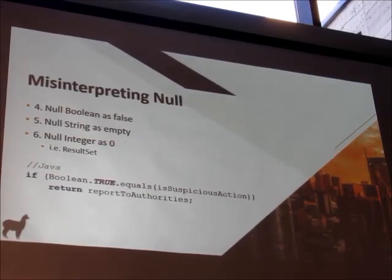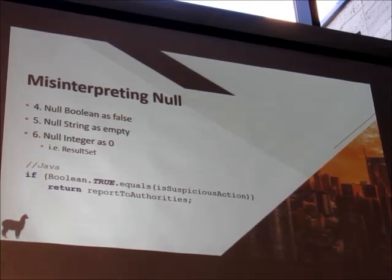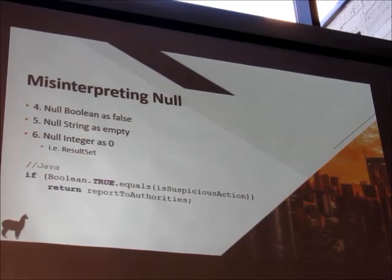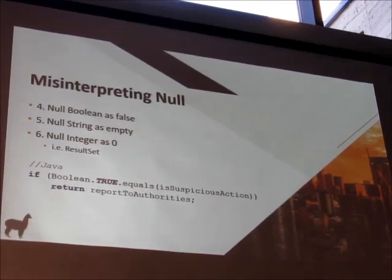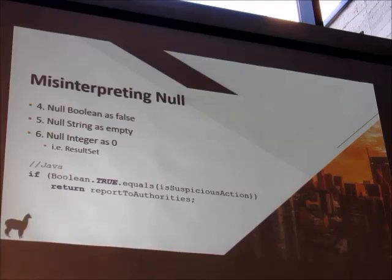There are some easy null defects around misinterpreting null. Sometimes you're getting data from elsewhere and you accidentally treat a null boolean as false, a null string as empty, or a null integer as zero. For example, suppose we have a system checking for criminals and we check if something equals suspicious action. If suspicious action is null, we're now treating criminals and someone with a broken null value as the same — so you could get a non-criminal flagged as one.